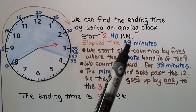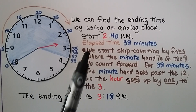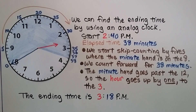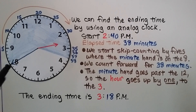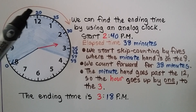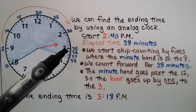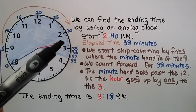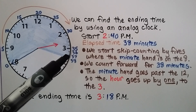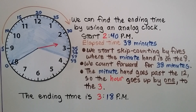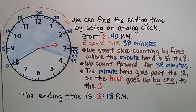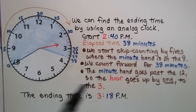What if the elapsed time was 38 minutes instead? We can find the ending time using an analog clock. We start at 2:40 — the minute hand is on the 8, which is our zero. We skip count by fives: 5, 10, 15, 20, 25, 30, 35. Then we count on one at a time: 36, 37, 38. We count forward 38 minutes and the minute hand goes past the 12, so the hour increases by one — it's not in the 2s anymore, it's in the 3s. The ending time is 3:18 p.m.